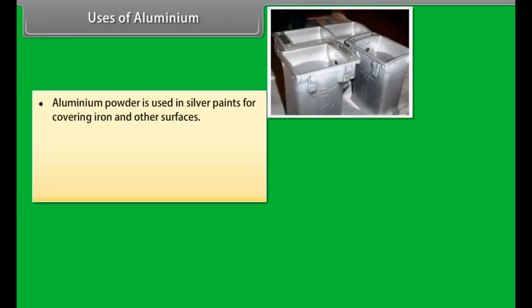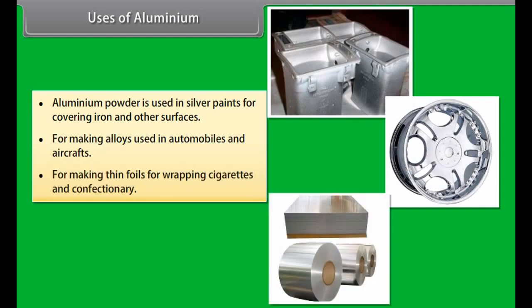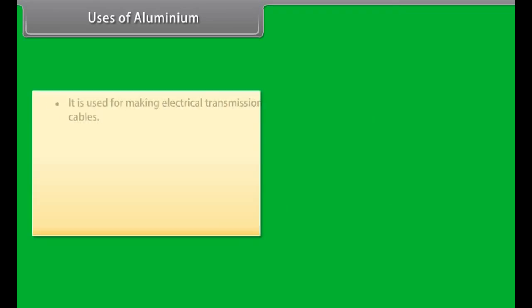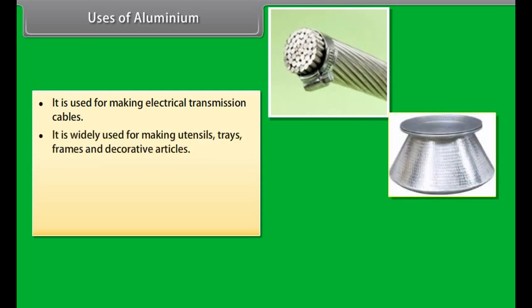Distillation: It is the process used to purify those metals which have low boiling points. Impure metal evaporated to obtain the pure metal as distillate. For example, zinc and mercury. Liquation: In this method, a low melting metal can be made to flow on a sloping surface. In this way, it is separated from impurities with higher melting point. For example, tin.